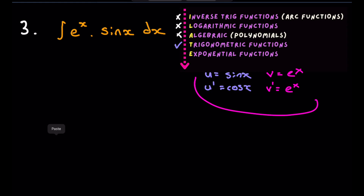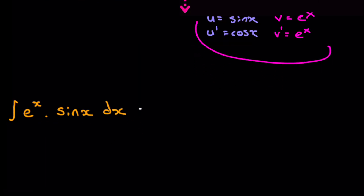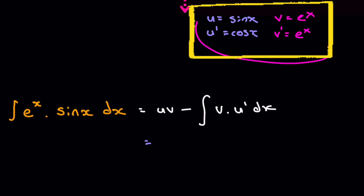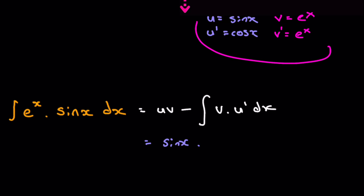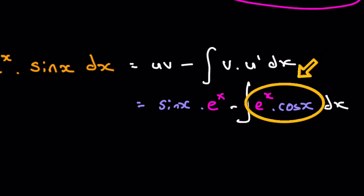Plugging everything into the integration by parts: we get sine x times e to the x, minus the integral of e to the x times cosine x with respect to x. Now we have to integrate that remaining integral using another integration by parts — this is a repetition. So we do it all over again going through ILATE.